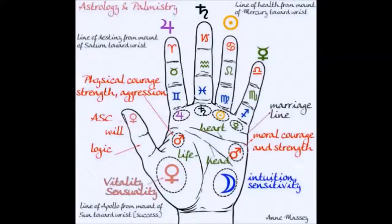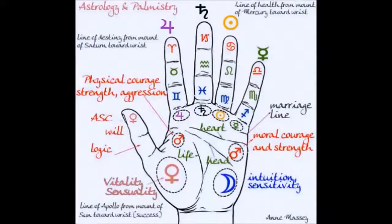Let's start with the thumb. The ASC - the ascendant - if you look at your horoscope chart, the ascendant is what was just coming over the horizon when you were born. It's a different sign than your Sun sign, and represents the qualities you project to the outside world. The thumb has to do with willpower and logic - how you express your inner personality in connection with the outside world. It's ruled by Venus, which moves down into the fleshy area of the thumb base and has to do with vitality and sensuality. The Moon area covers intuition and sensitivity, and Mars covers physical courage, strength, aggression and moral courage.